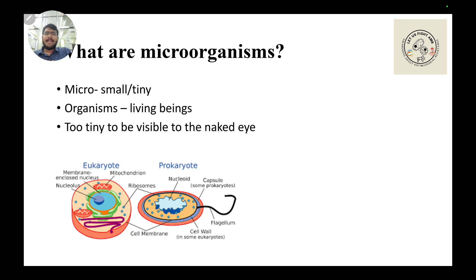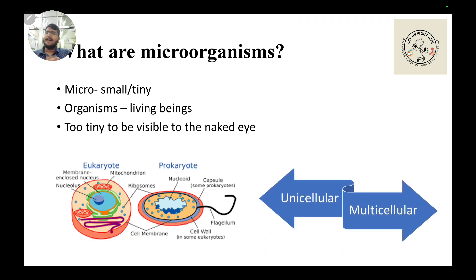Another set of terms is unicellular and multicellular. Uni stands for single, so a unicellular organism is made up of a single cell — basically a one-man army. The best example for this would be amoeba, which I'm sure we have all learned about from school. That ghost-like, irregularly shaped organism is a unicellular organism.